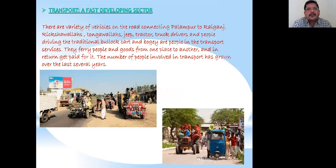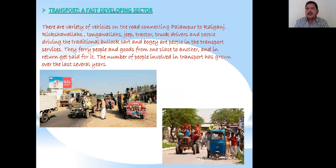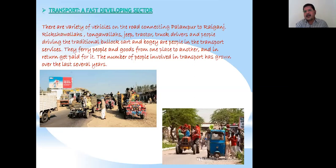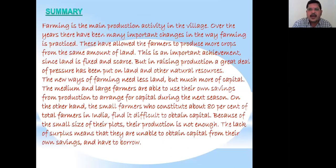The next non-farm activity is transport. There are a variety of vehicles on the road connecting Palampur to Raiganj — rickshaw wallahs, tonga wallahs, jeep, tractor, and truck drivers, and people driving traditional bullock carts and buggies — all engaged in transport services as their profession and earning money from it.